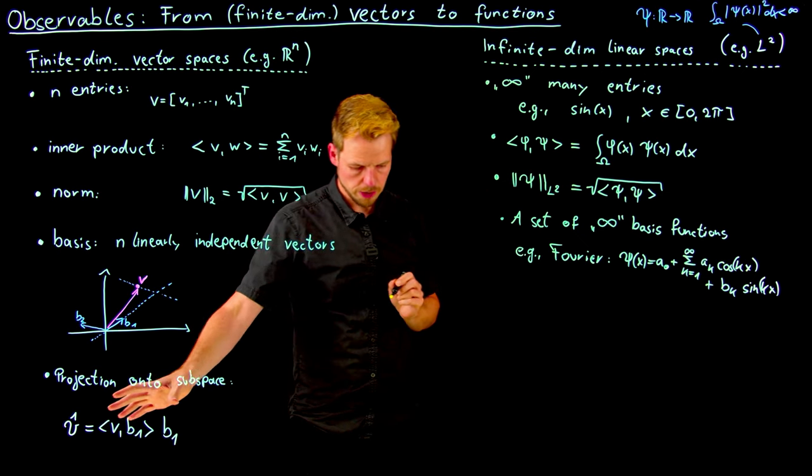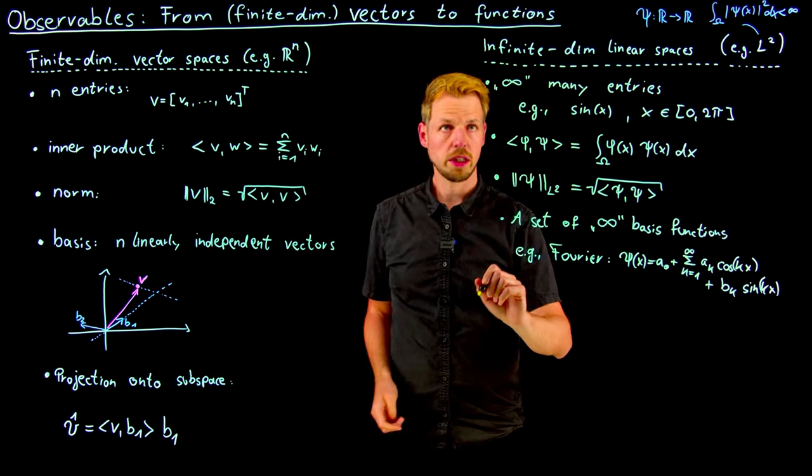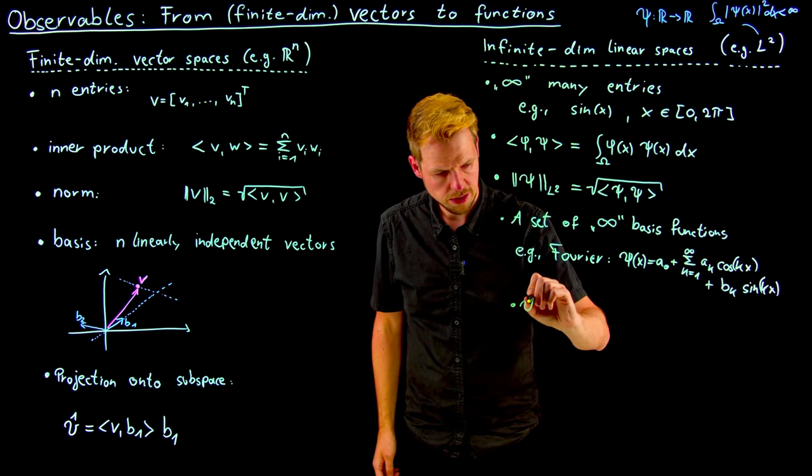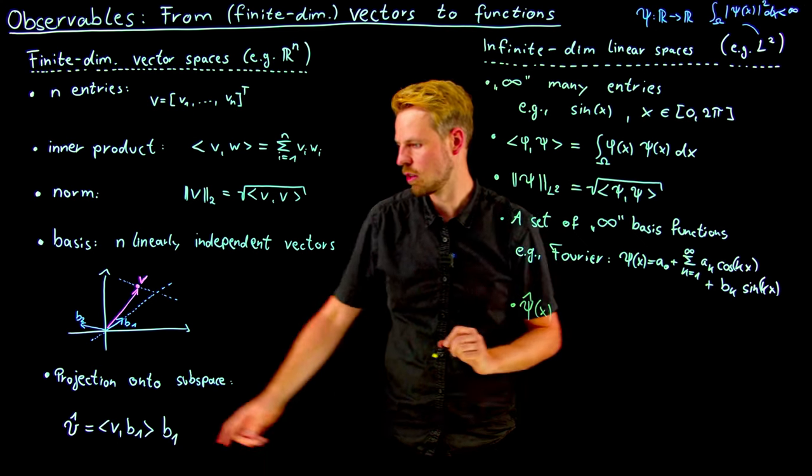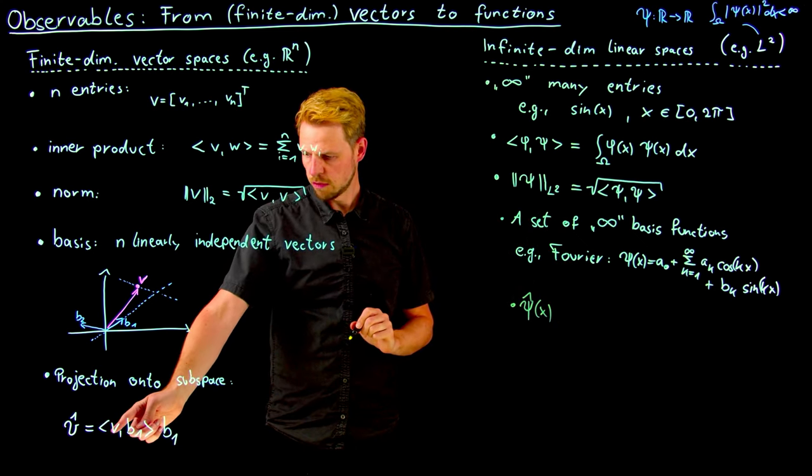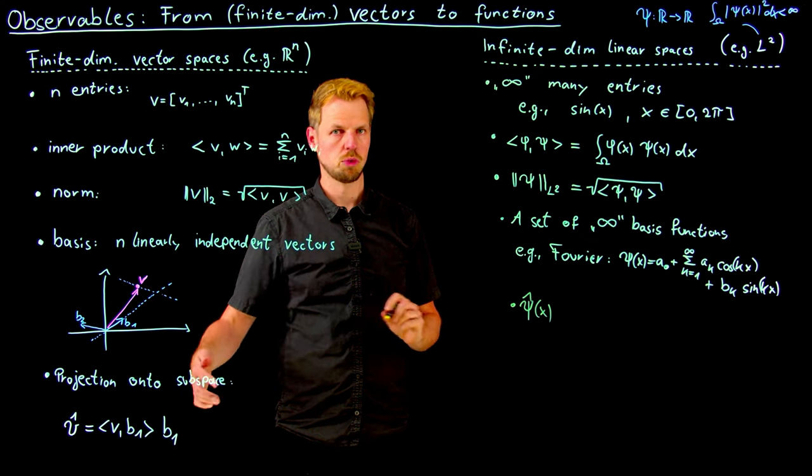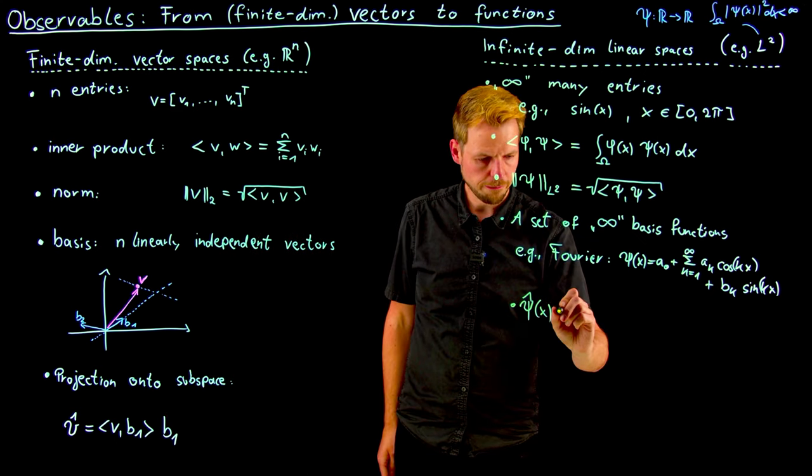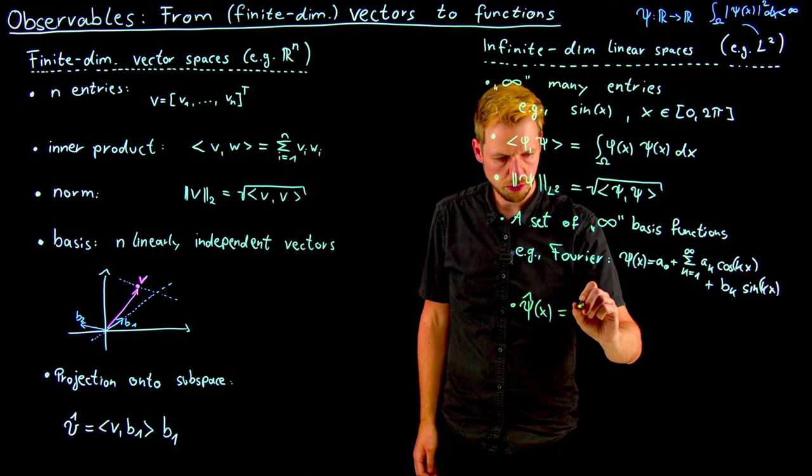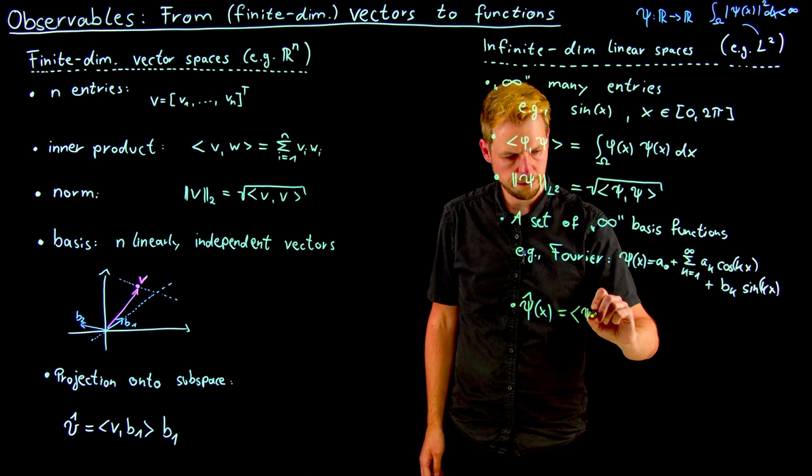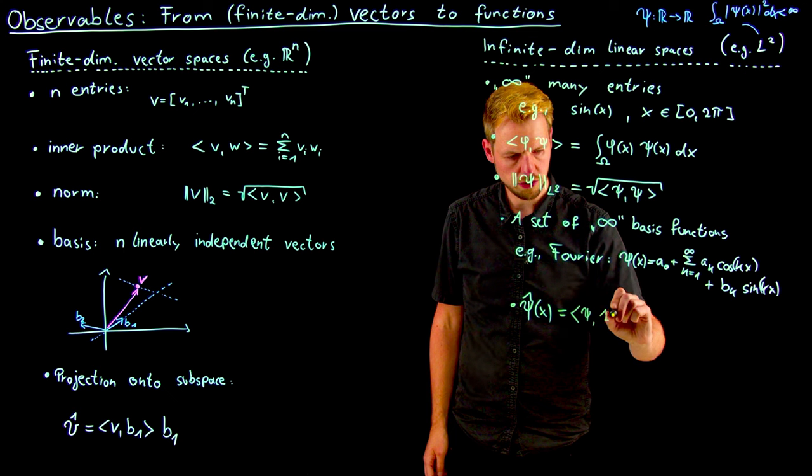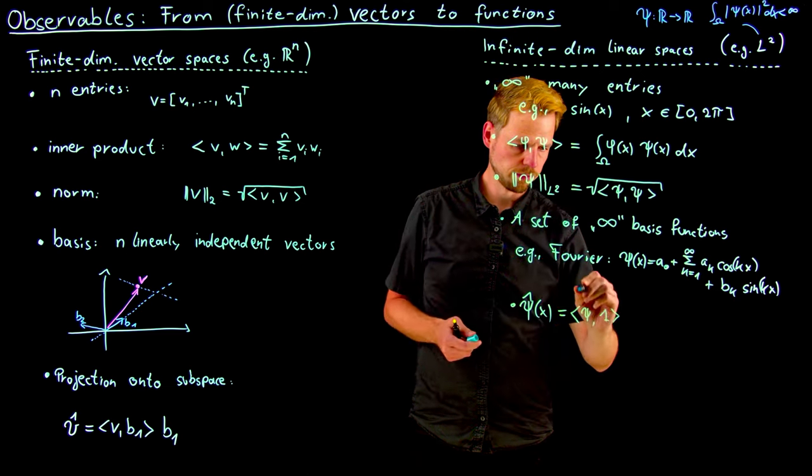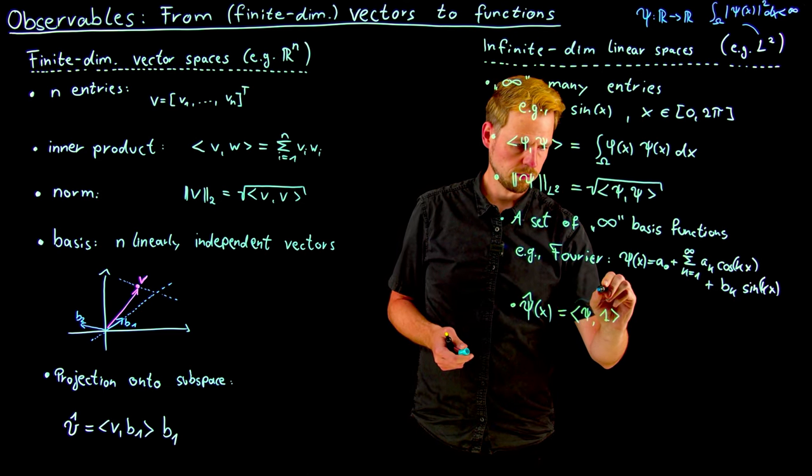This brings us to the projection step. We can proceed exactly as before. Our approximate function c hat of x - here we had the approximate vector which was the projection onto the basis element - and we can do the same here. We take the projection, the inner product of c onto the constant function, times the constant function. This gives us the a term.